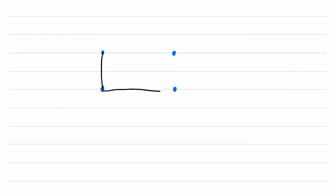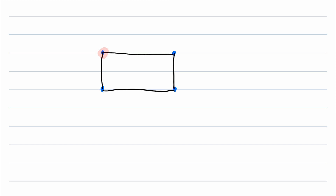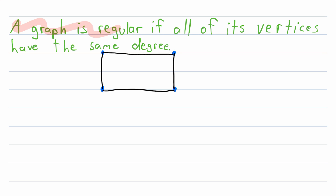We'll begin with a quick recap of regular graphs. I'm sure you all remember what regular graphs are, but just a really quick recap to be sure. So here's an example of a regular graph — this is my go-to example. A regular graph is a graph whose vertices all have the same degree. In this example, every vertex has degree two; each vertex is adjacent to two vertices. So a graph is regular if all of its vertices have the same degree.